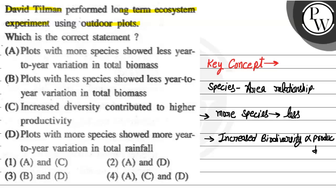So the correct statements are: when there were more species, there was less year-to-year variation in total biomass. Therefore the final answer is the first option, A and C. Hope you understood it well. Best of luck.